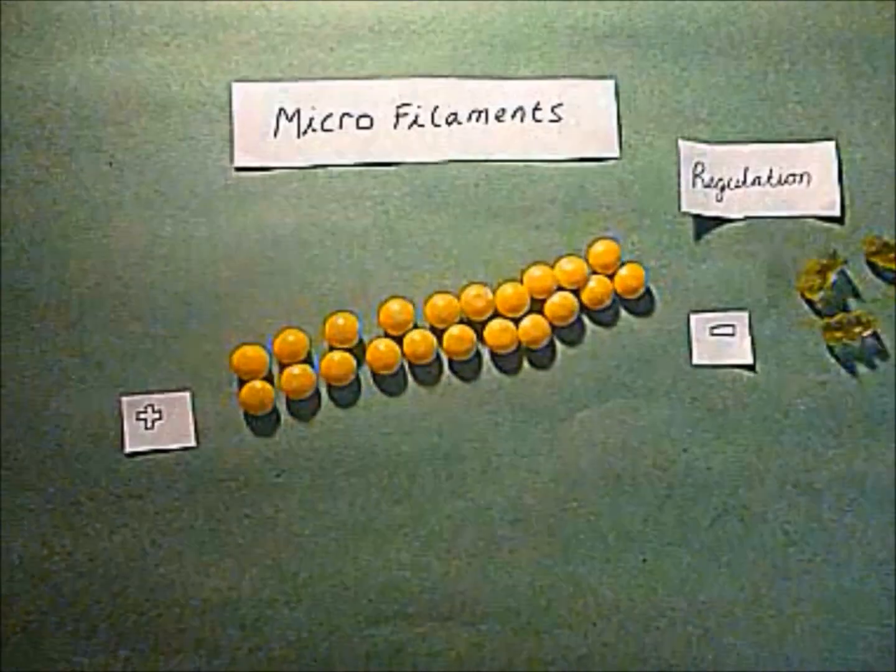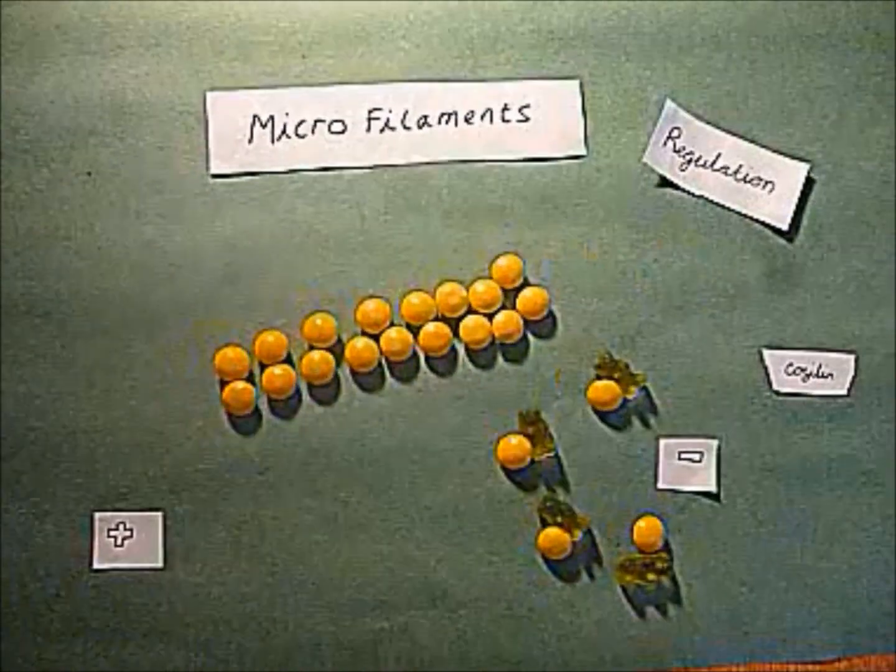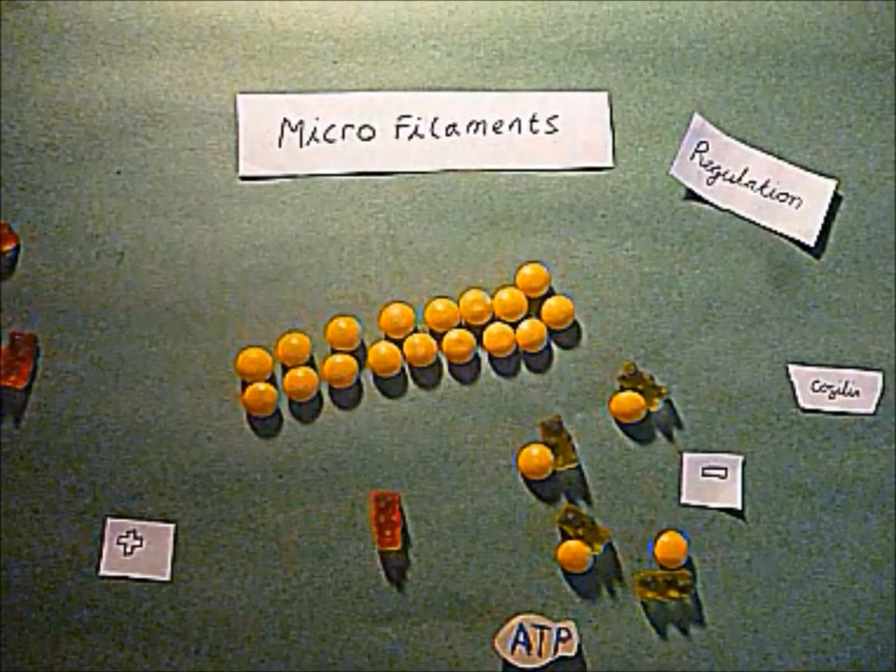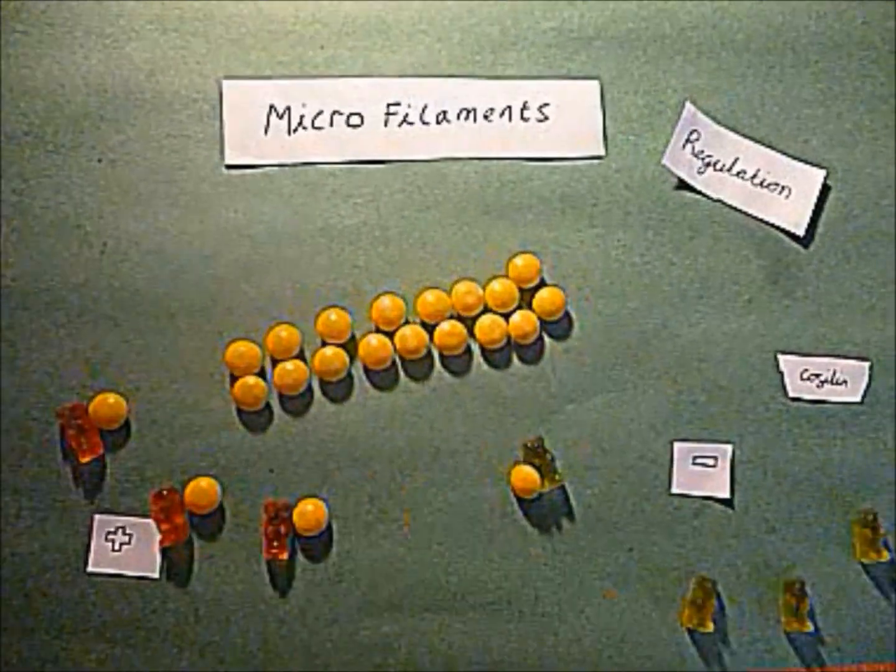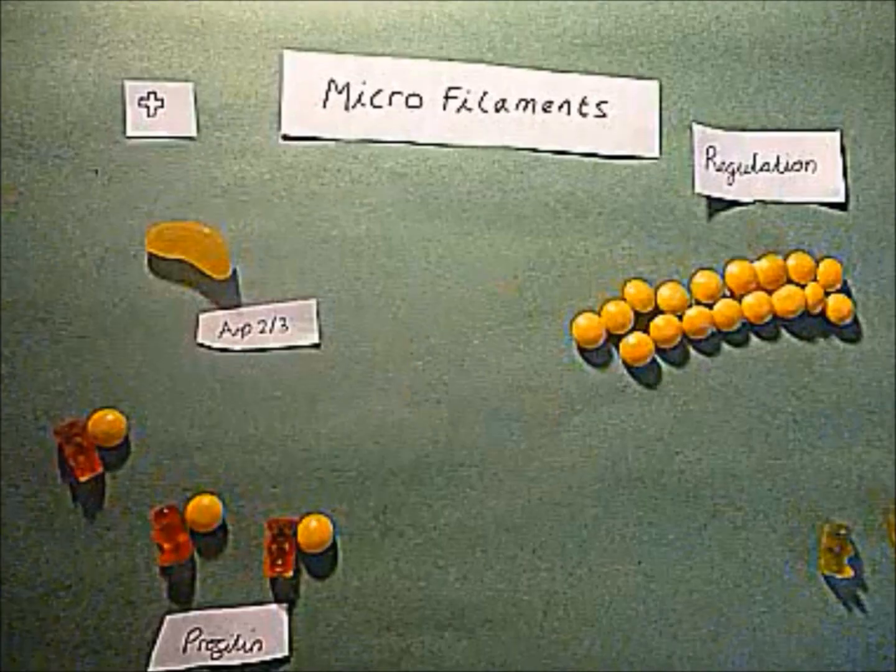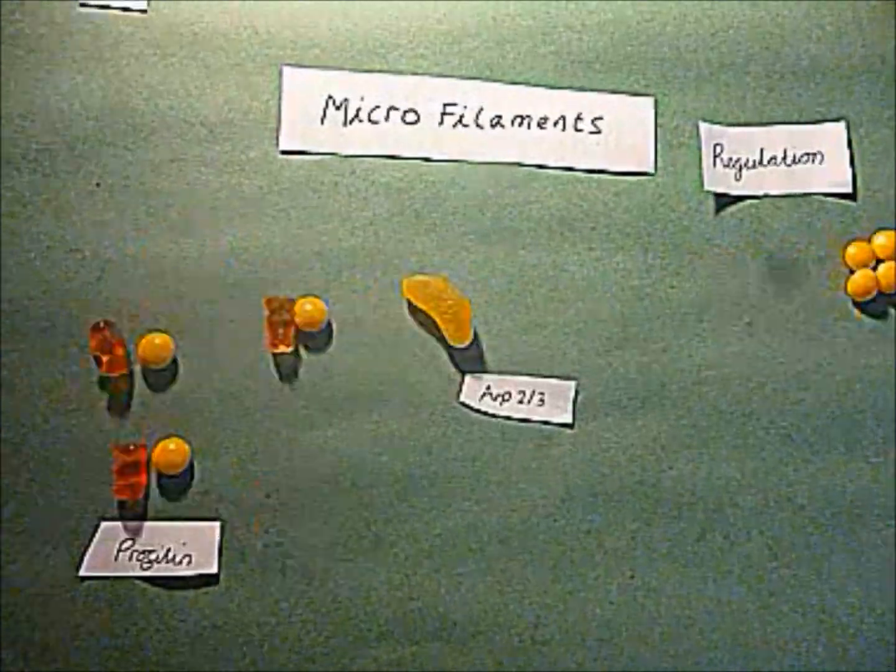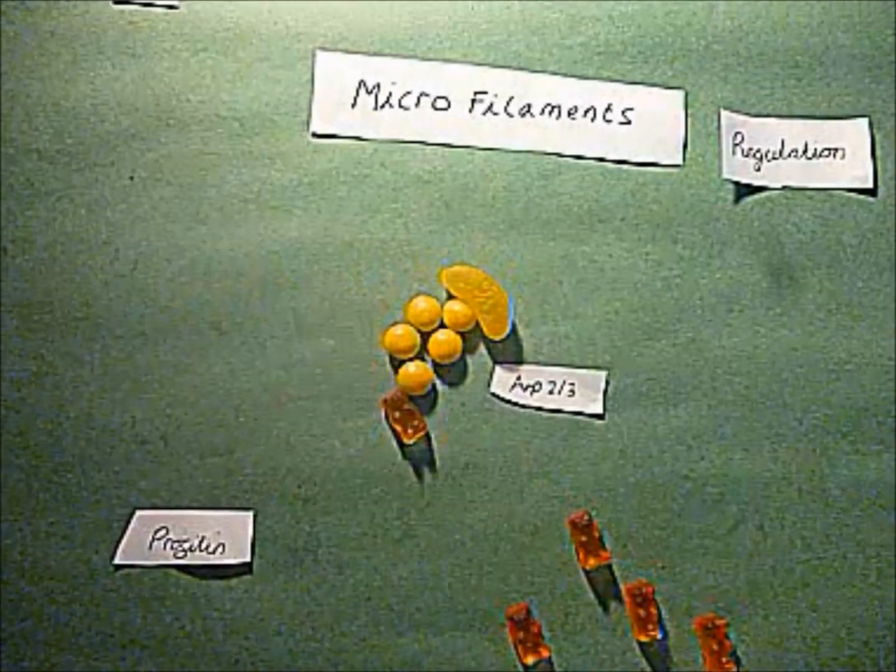Filaments can be broken down by cofilin binding to actin filaments. Profilin reverses cofilin action with the use of ATP. ARP2 or ARP3 proteins provide nucleation sites for a new filament to form.